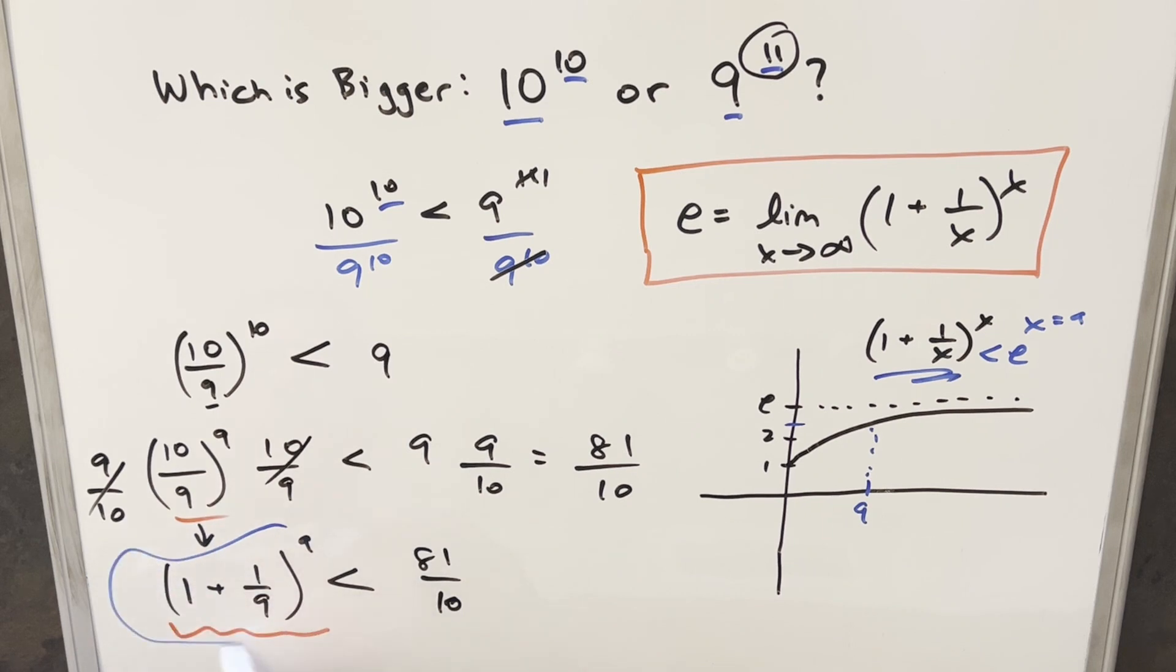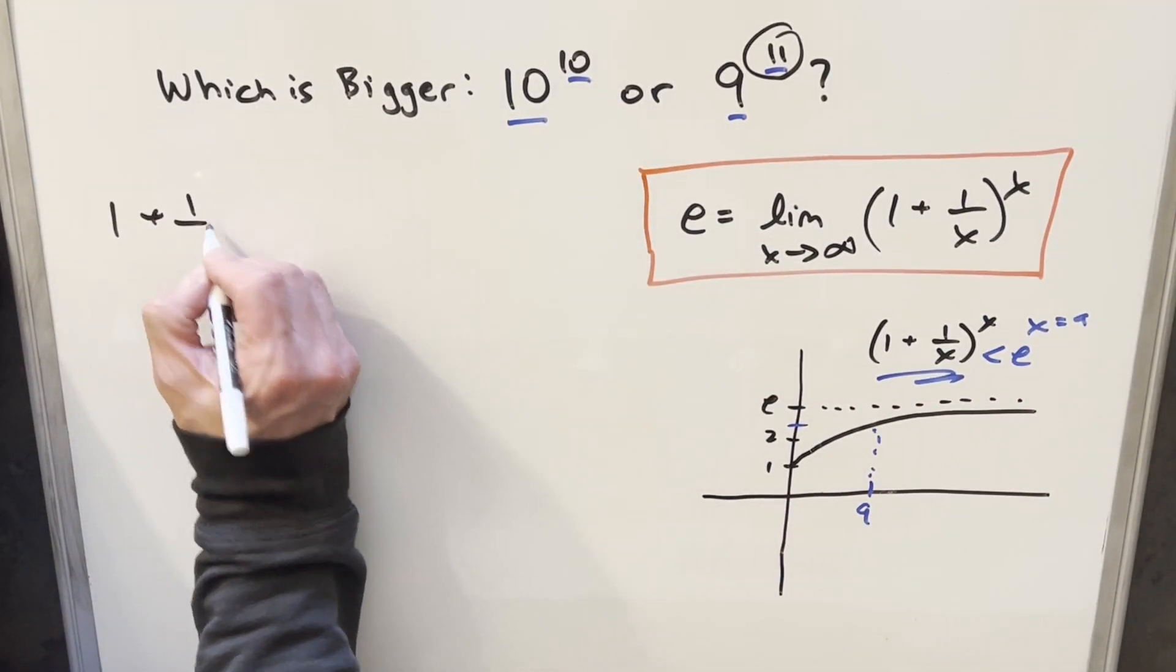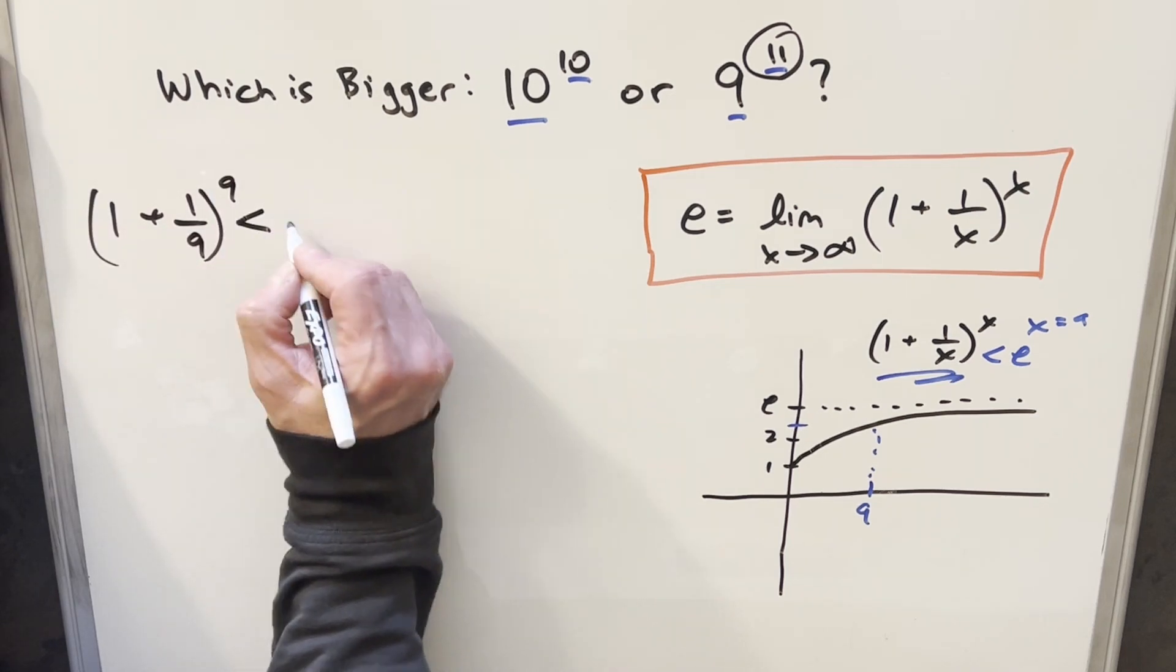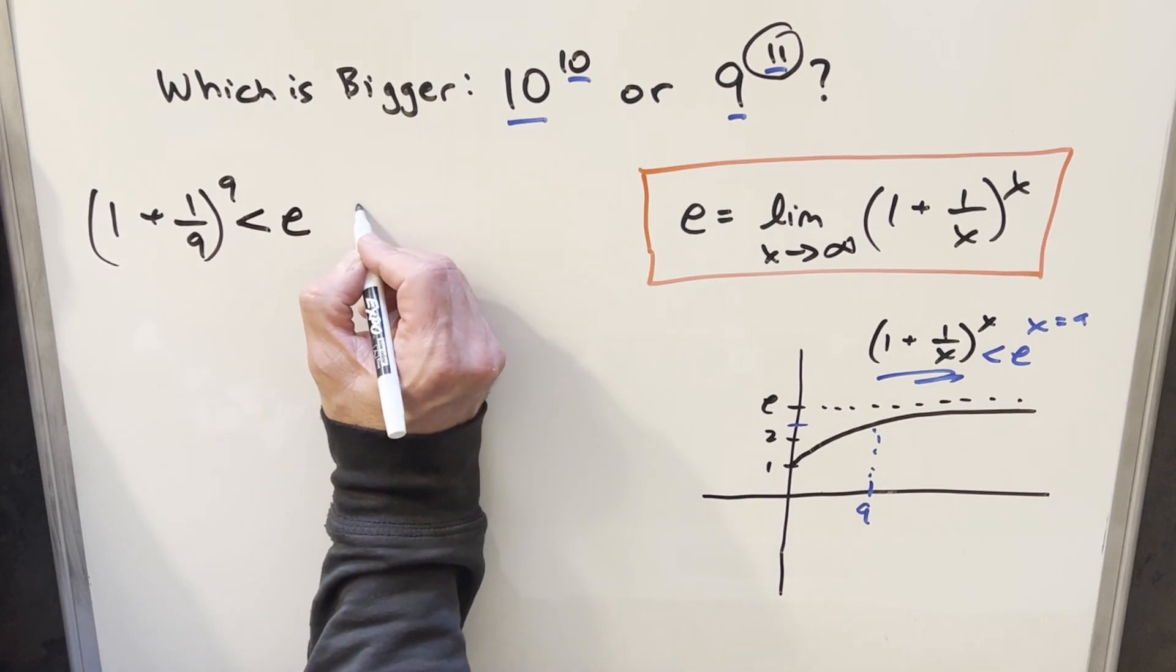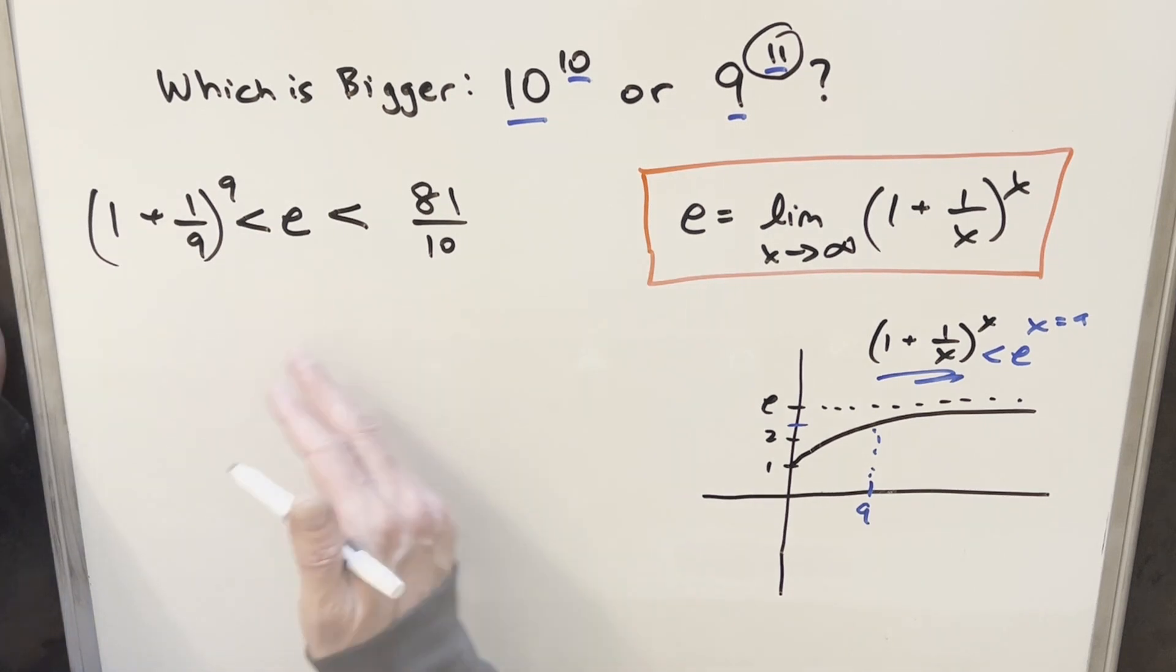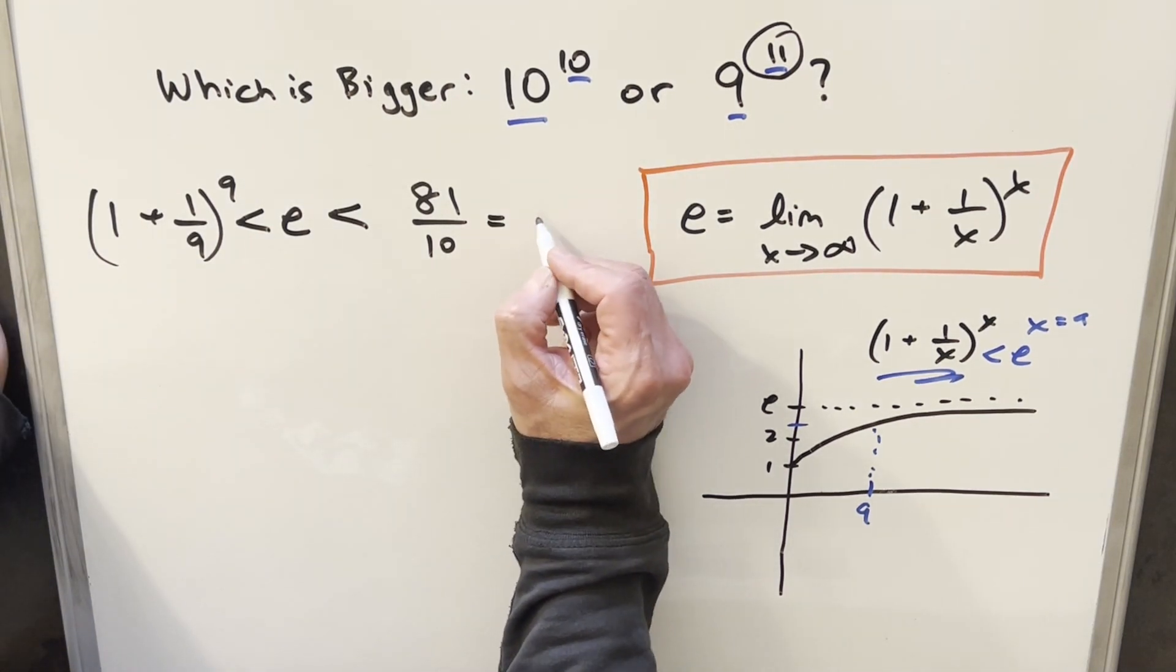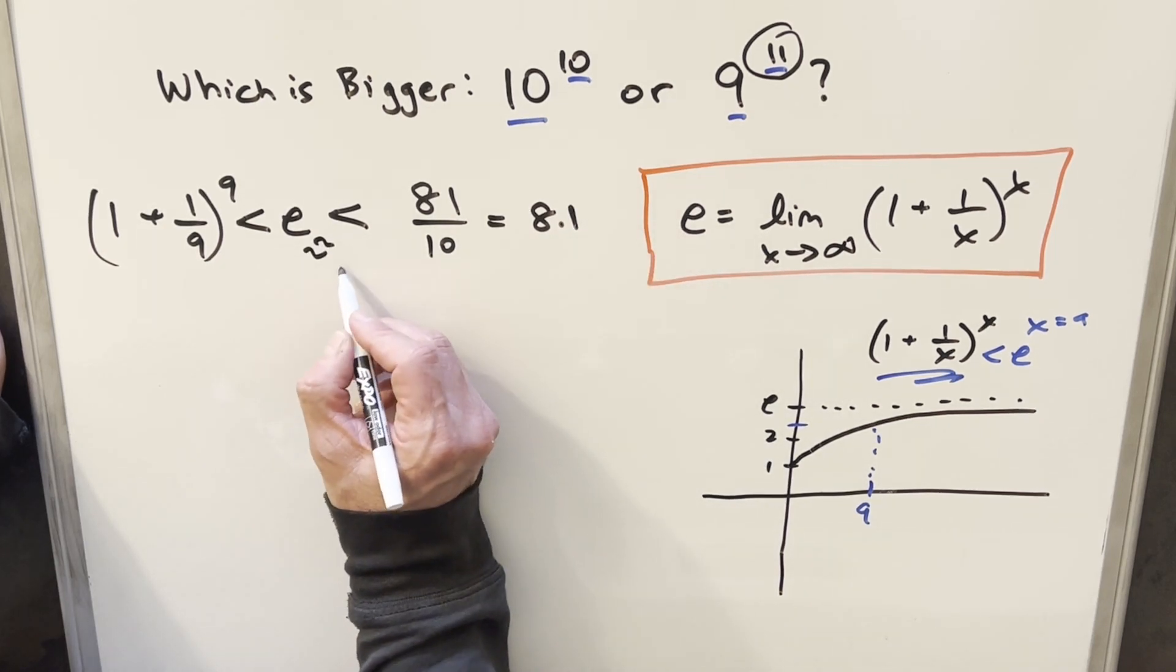Based on this graph, we can say that (1 + 1/9)^9 is clearly going to be less than e. But then what we're comparing this to is that e is also less than 81/10, because this was the right side of our equation. 81/10 is the same as 8.1, and e is something like 2.718, etc.